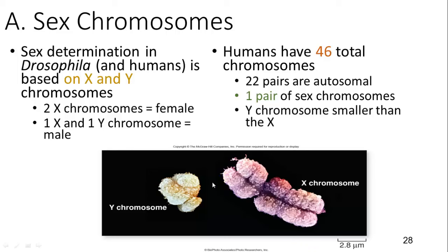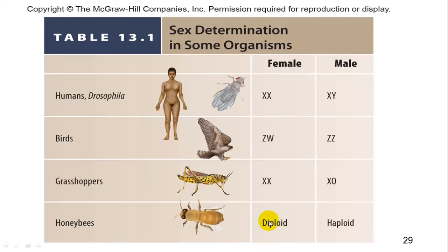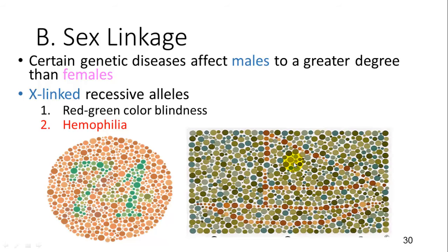Humans have 46 total chromosomes: 22 pairs are autosomal, meaning not sex chromosomes, and one pair of sex chromosomes, with the Y being much smaller than the X. There are other organisms with different systems. In Drosophila the homozygous is female; in birds the homozygous is male; in grasshoppers two alleles means female and one means male; in honeybees diploid means female and haploid means male.